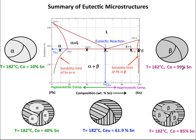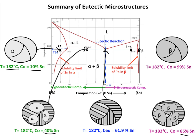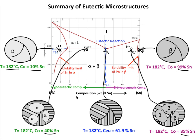We will now summarize the five microstructures found, all at 182°C. At 10% tin: polycrystalline single-phase alpha. At 40% tin: crystalline alpha chunks with eutectic alternating platelets of alpha and beta. At the eutectic composition of 61.9% tin: just alternating platelets of alpha and beta. At 85% tin: crystalline chunks of pro-eutectic beta along with alternating platelets of alpha and beta. At 99% tin: single-phase polycrystalline beta.